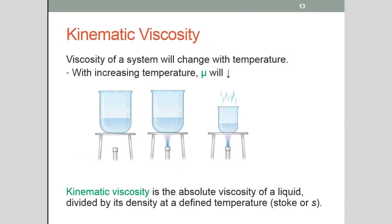Now kinematic viscosity. It's the absolute viscosity of a liquid divided by its density at a defined temperature. It can be described using the units stoke or s. Well what do we mean by this?